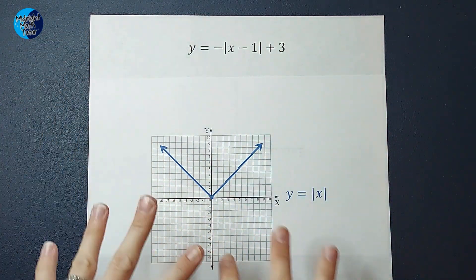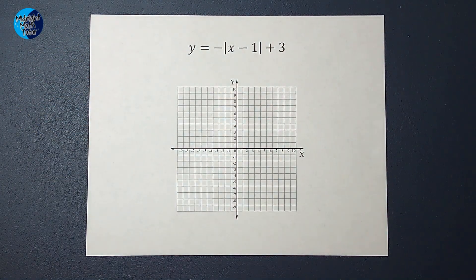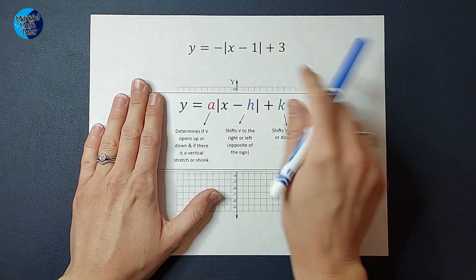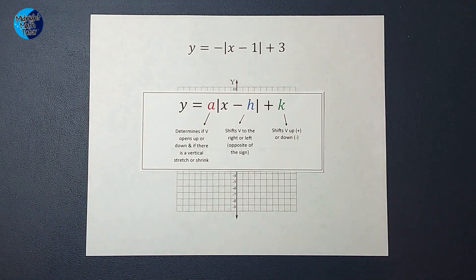And these numbers and things tell us how to change this parent graph. So how do we know what these numbers mean? If you have something out front, out in front of the absolute value bars, that tells you something.